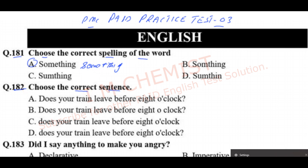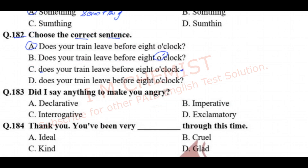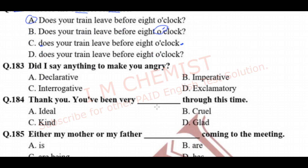Question number 182: choose the correct sentence. Here we have to find the sentence with correct punctuation. Option A is correct. The first letter of a sentence should always be capital, and check for the punctuation mark at the end. As there is a question, we should put a question mark at the end. With time expressions like o'clock, we use an apostrophe after 'o' and before 'clock'.